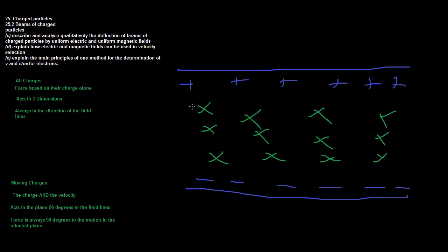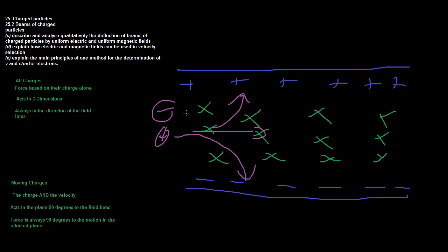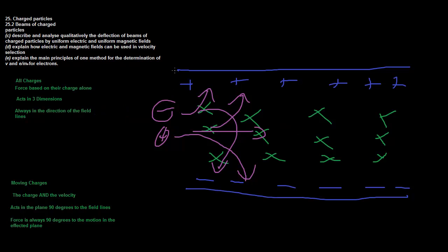Opposing fields means: a proton moving in is positively charged, so the electric field pulls it one way, but the magnetic field pushes it the opposite way. For electrons, both forces are reversed. One important note about the right-hand rule: for electrons, always point your right-hand index finger in the direction opposite to the velocity, since conventional current is in the direction a positive charge would move.